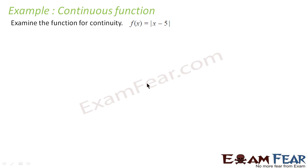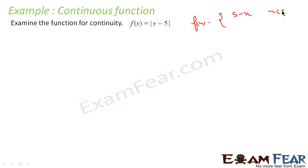Let us take one more example. We have to examine the continuity of f(x) = |x - 5|. The tricky part in this question is that we have this modulus, which is difficult to operate with — I want to get rid of it as soon as possible. What should I do? I can rewrite the same equation as: 5 - x for x less than 5, and x - 5 for x greater than 5.